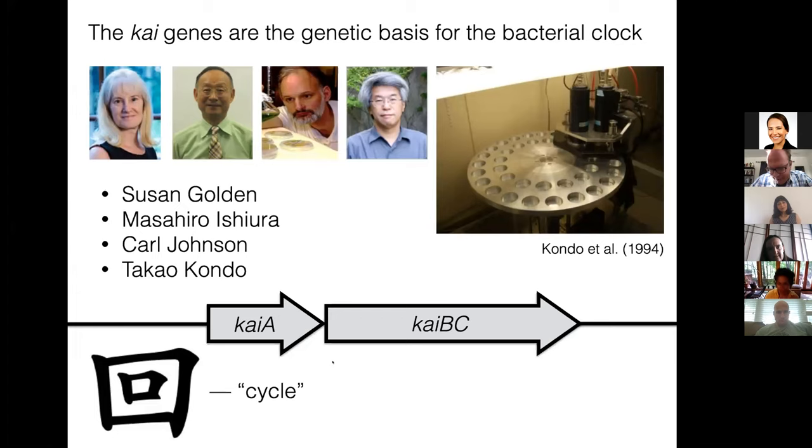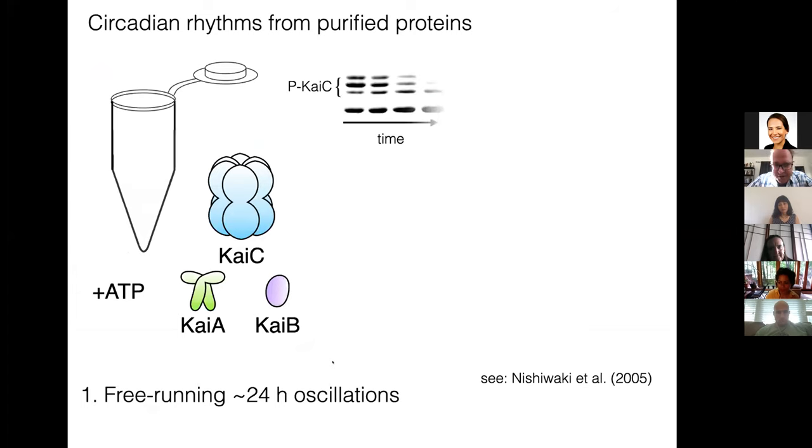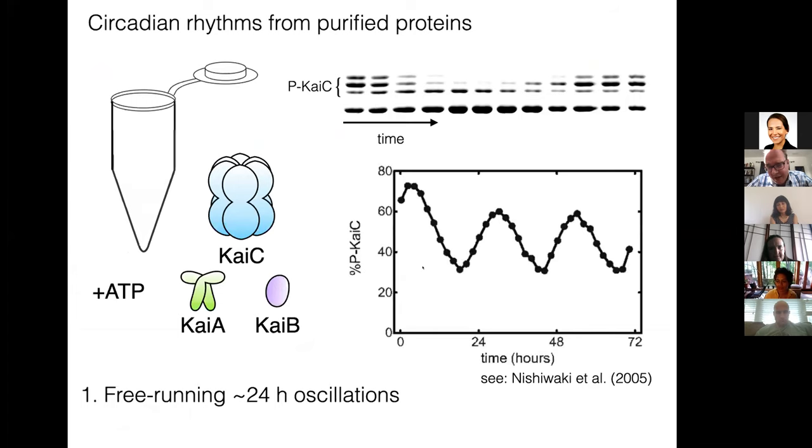If you delete those genes, you lose the rhythms. But what really has captured many people's imagination, it turns out if you take the protein products of these genes, purified KaiA, B, C proteins, and you mix them in a test tube, what you see is there's a free-running rhythm in the phosphorylation of this protein called KaiC. Here, every lane is sampled every two hours. And if you plot this, what you see is a nearly 24-hour self-sustaining oscillation in phosphorylation.